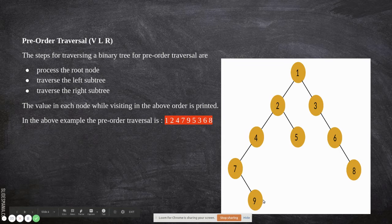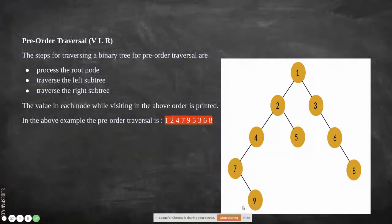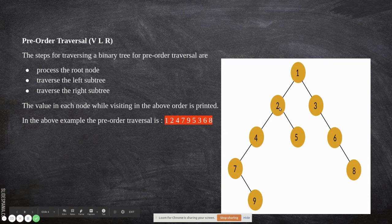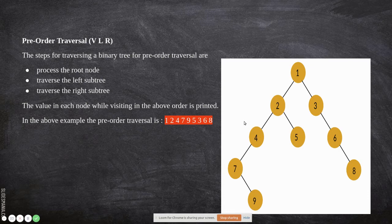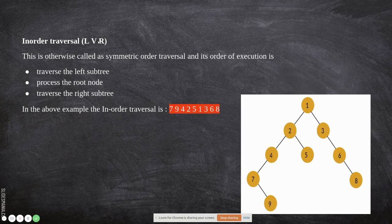When there is no left child, we move to the right, and that right child is printed — so 9 is printed. Then we move back up. Since that node has already been printed, we check the right child, and it is printed next. Continuing up and to the right, the parent is printed first, then 6 is printed, and finally its right child is printed last. That completes pre-order traversal.